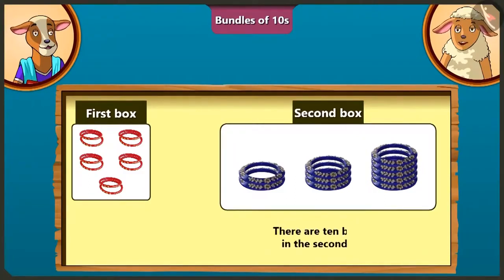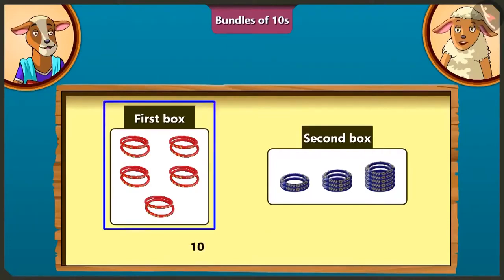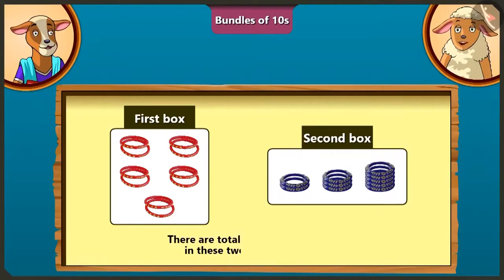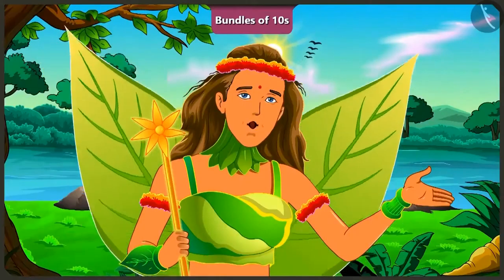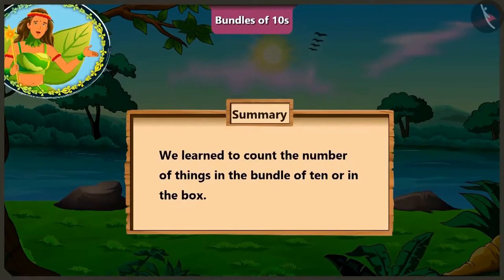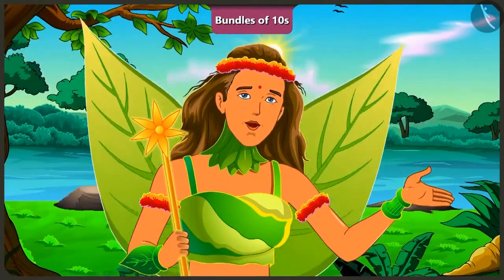Oh wow! Absolutely right! Now tell me, how many bangles are there in these two boxes? There are ten bangles in the first box and there are also ten bangles in the second box. So, if we add ten and ten, there will be twenty. So there are total twenty bangles in these two boxes. Well done, Lily! Friends, today we learned to count the number of objects in the bundle of ten and also in the boxes with the help of examples. In the next video, we will understand about tens and ones.